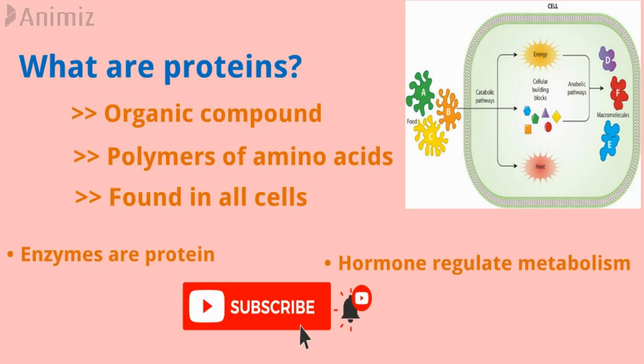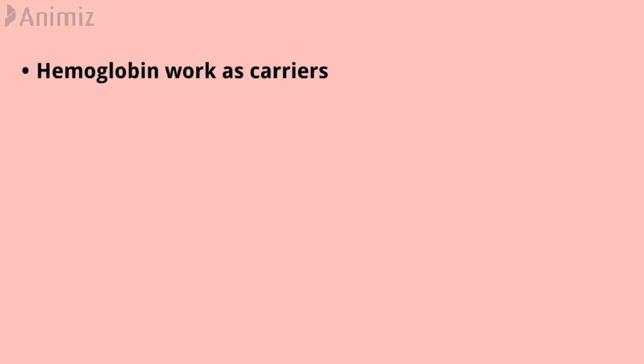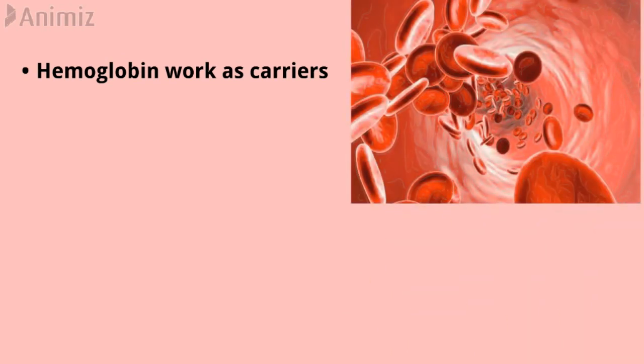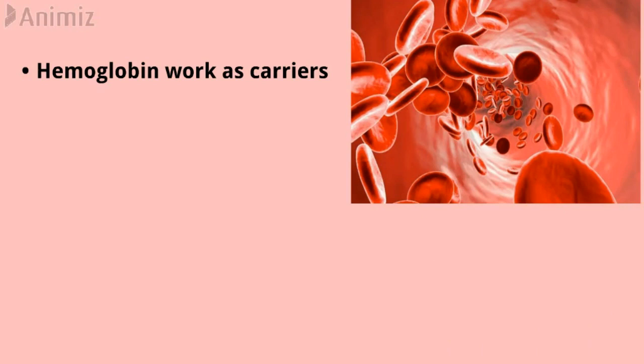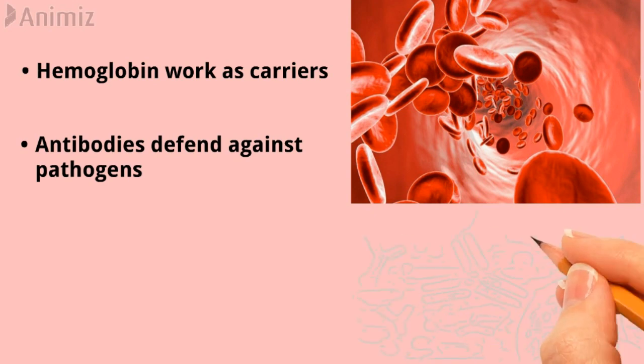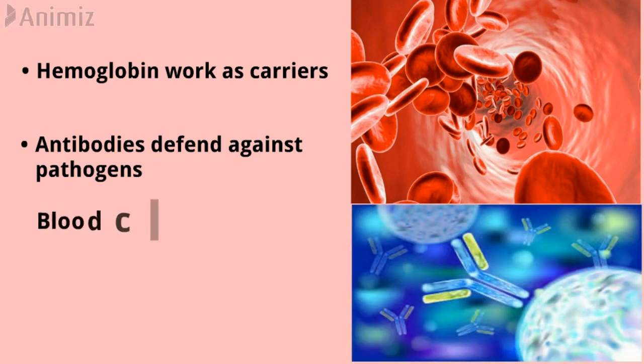Some proteins, like hemoglobin, work as carriers and transport specific substances such as oxygen, lipids, and metal ions. Some proteins are called antibodies; they defend the body against pathogens. Blood clotting proteins prevent the loss of blood from the body after an injury.